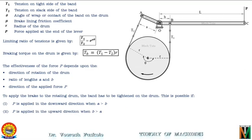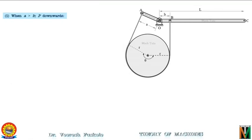The first case is when A is greater than B and P is applied in the downward direction. You can see in the diagram that the distance A is greater than B and the force is applied in the downward direction. When the force is applied in the downward direction, this side of the belt will be pulled up and the band will be tightened and the brakes will be applied. If the force is applied in the upward direction in this case, then this portion of the lever will come down and the band will be loosened and thus the brakes will not be applied. So, if A is greater than B, then the force should be applied in the downward direction.